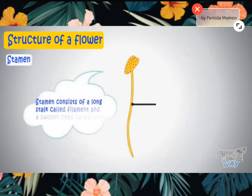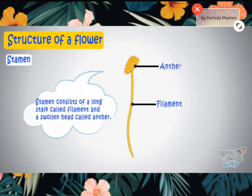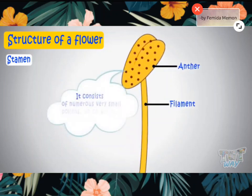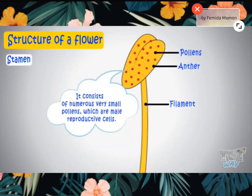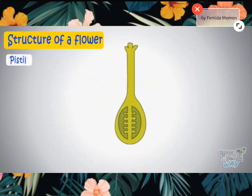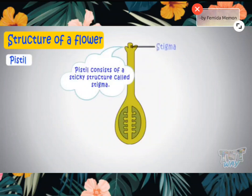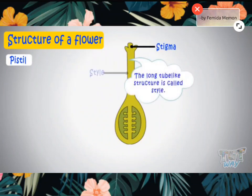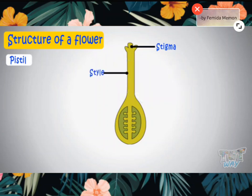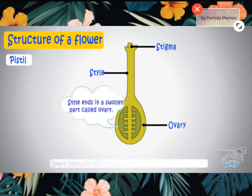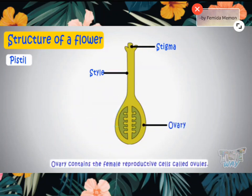Stamen consists of a long stalk called the filament and a swollen head called the anther. It consists of numerous very small pollens, which are male reproductive cells. The pistil consists of a sticky structure called the stigma, attached to a long tube-like structure called the style, and the style ends in a swollen part called the ovary, which contains the female reproductive cells called ovules.